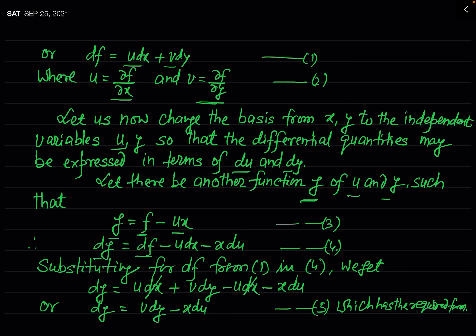Since g = f − ux, we can find dg. Since ux is a product of two functions, we apply the product rule: dg = df − u dx − x du. We already obtained df = u dx + v dy in equation 1. Substituting this value of df, we get dg = u dx + v dy − u dx − x du. The u dx terms cancel, leaving dg = v dy − x du.